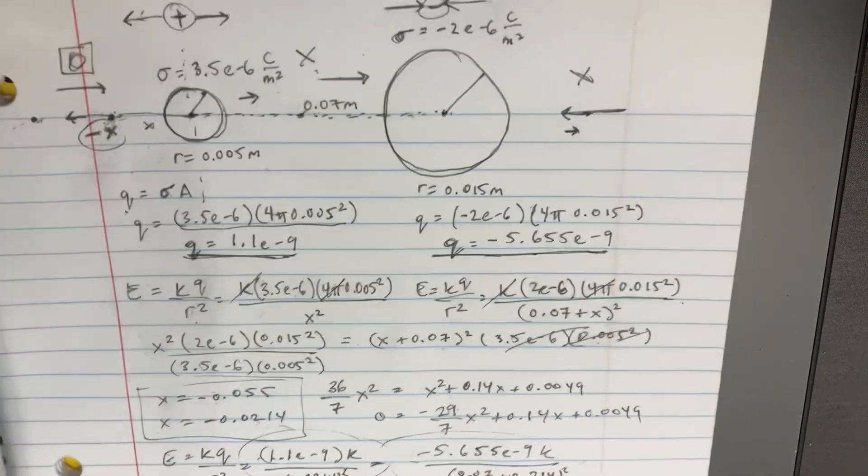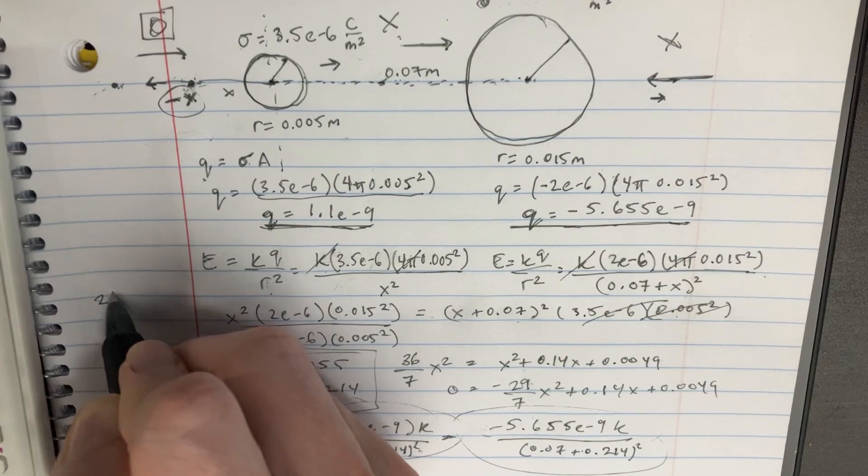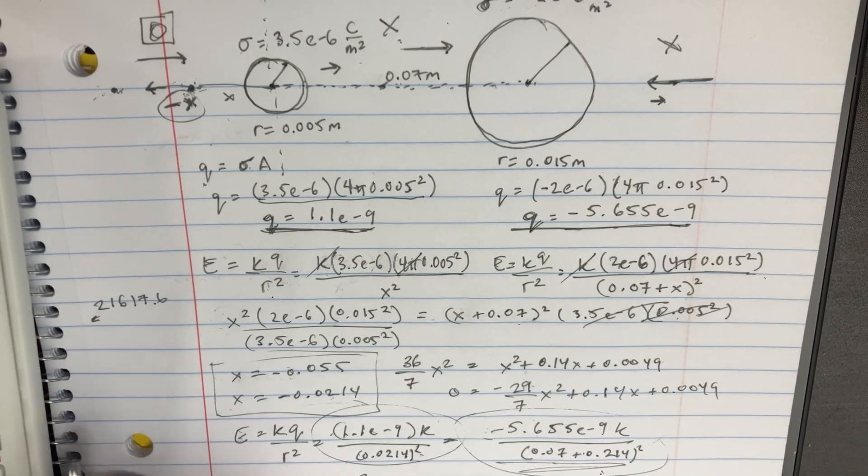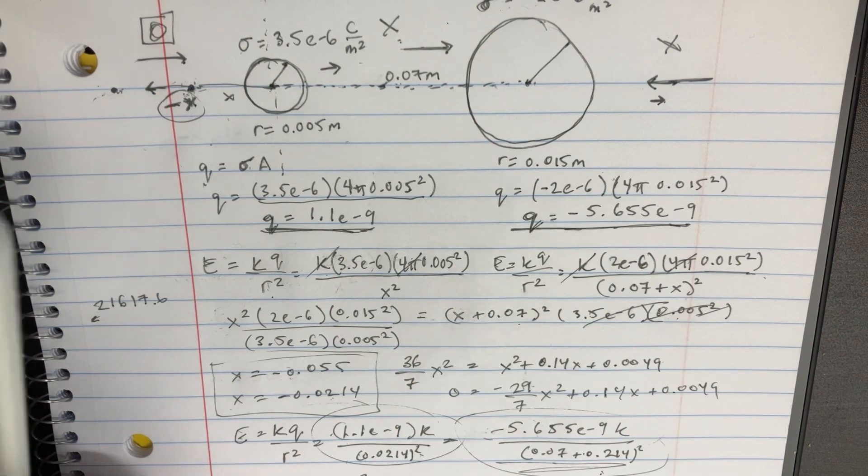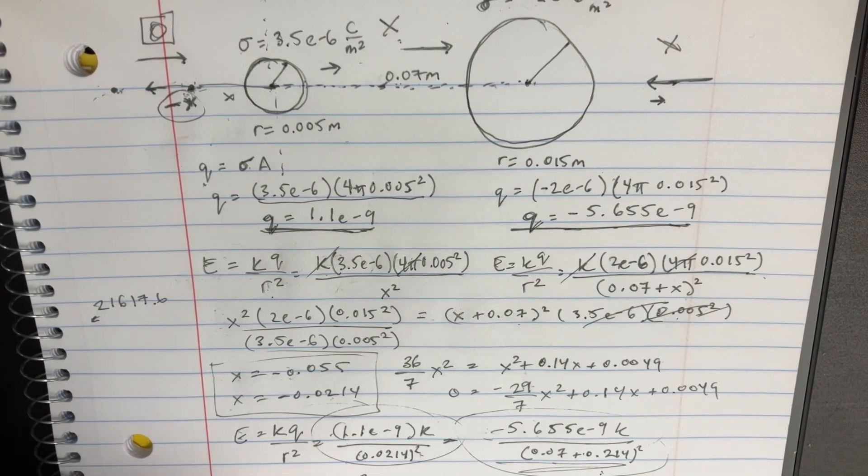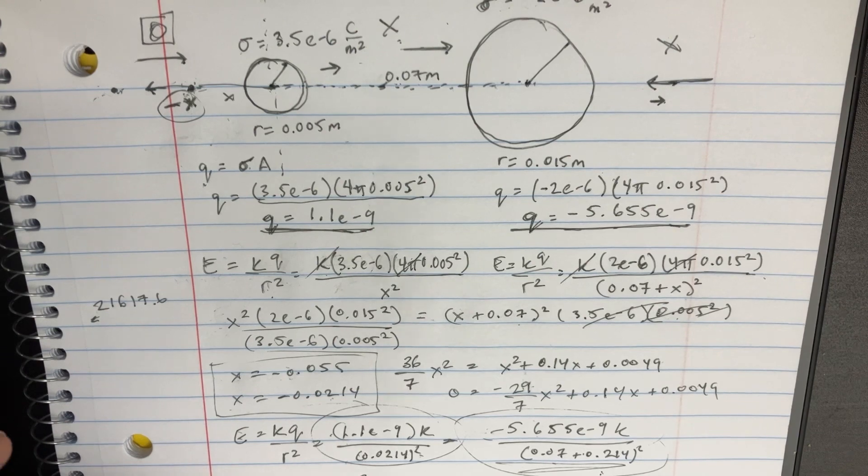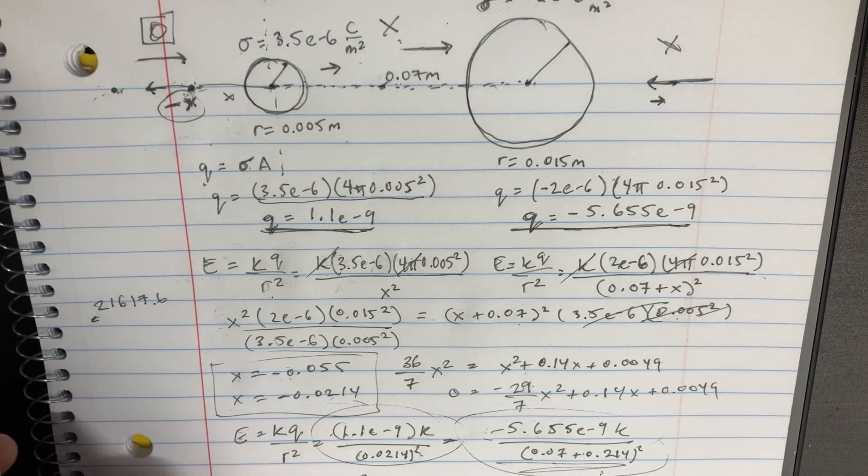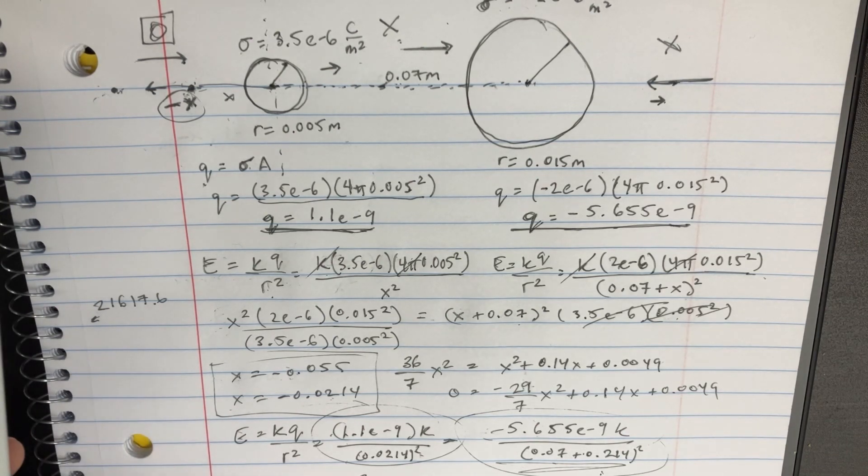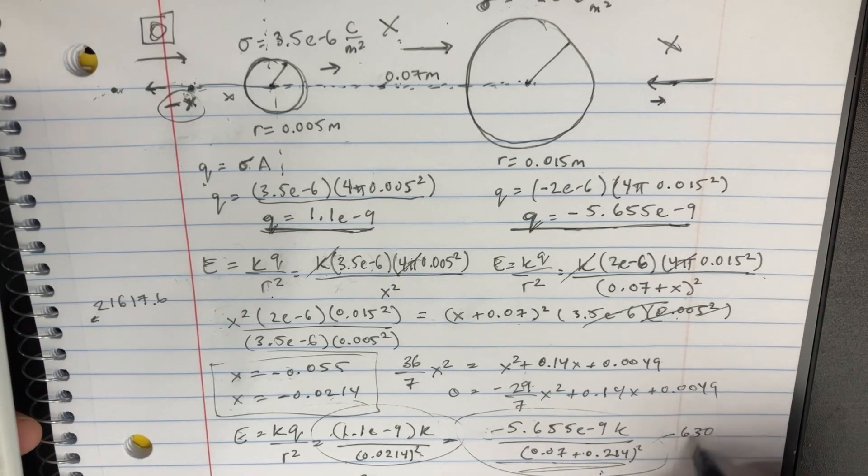This is going to be 21.6. And then on this side, we're comparing it to this. That is going to be negative 5.65. Then we've got this whole thing divided by 0.07 plus 0.0214 squared. This is negative 6.30. That's not the same.